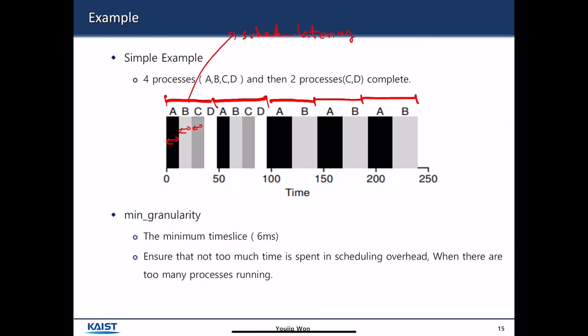However, the CFS scheduler defines the term minimum granularity. It avoids frequent context switch. Because in the previous slide, we defined the length of the time slice as the length of sched_latency divided by number of processes. However, it is possible that number of processes getting larger and larger, and then the length of time slice getting shorter, and then it may cause an extremely frequent context switch. That will be very bad for the overall system performance. So CFS scheduler defined a notion of minimum granularity as a minimum time slice. The minimum time slice is 6 milliseconds. It is used to ensure that not too much time is spent on scheduling overhead.